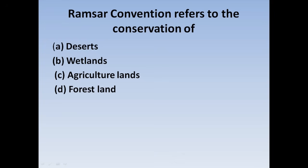Second question: Ramsar Convention refers to the conservation of — Option A: Desert, Option B: Wetland, Option C: Agricultural Land, Option D: Forest Land. Correct answer: Wetland. Ramsar Convention refers to the conservation of Wetlands.